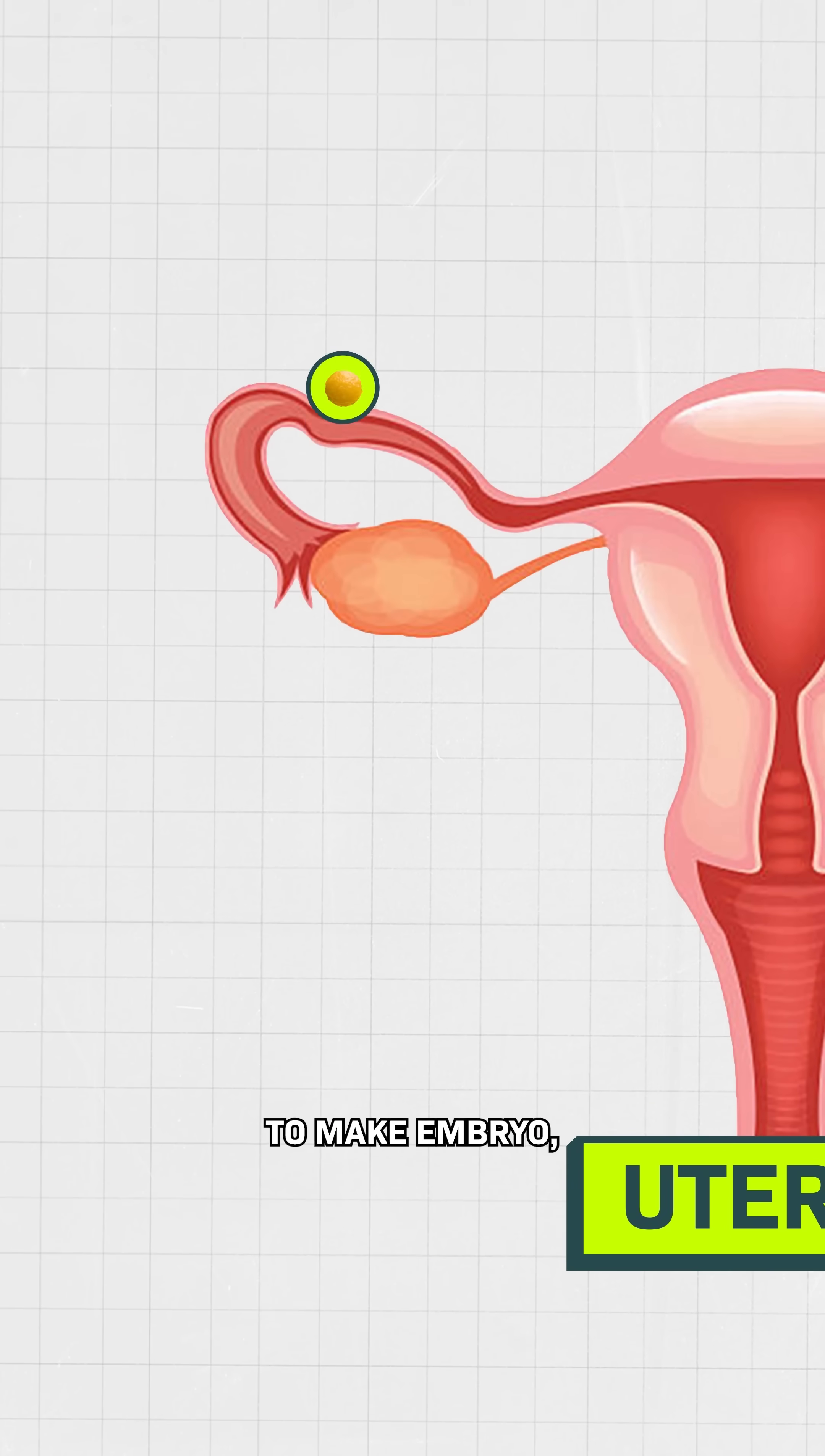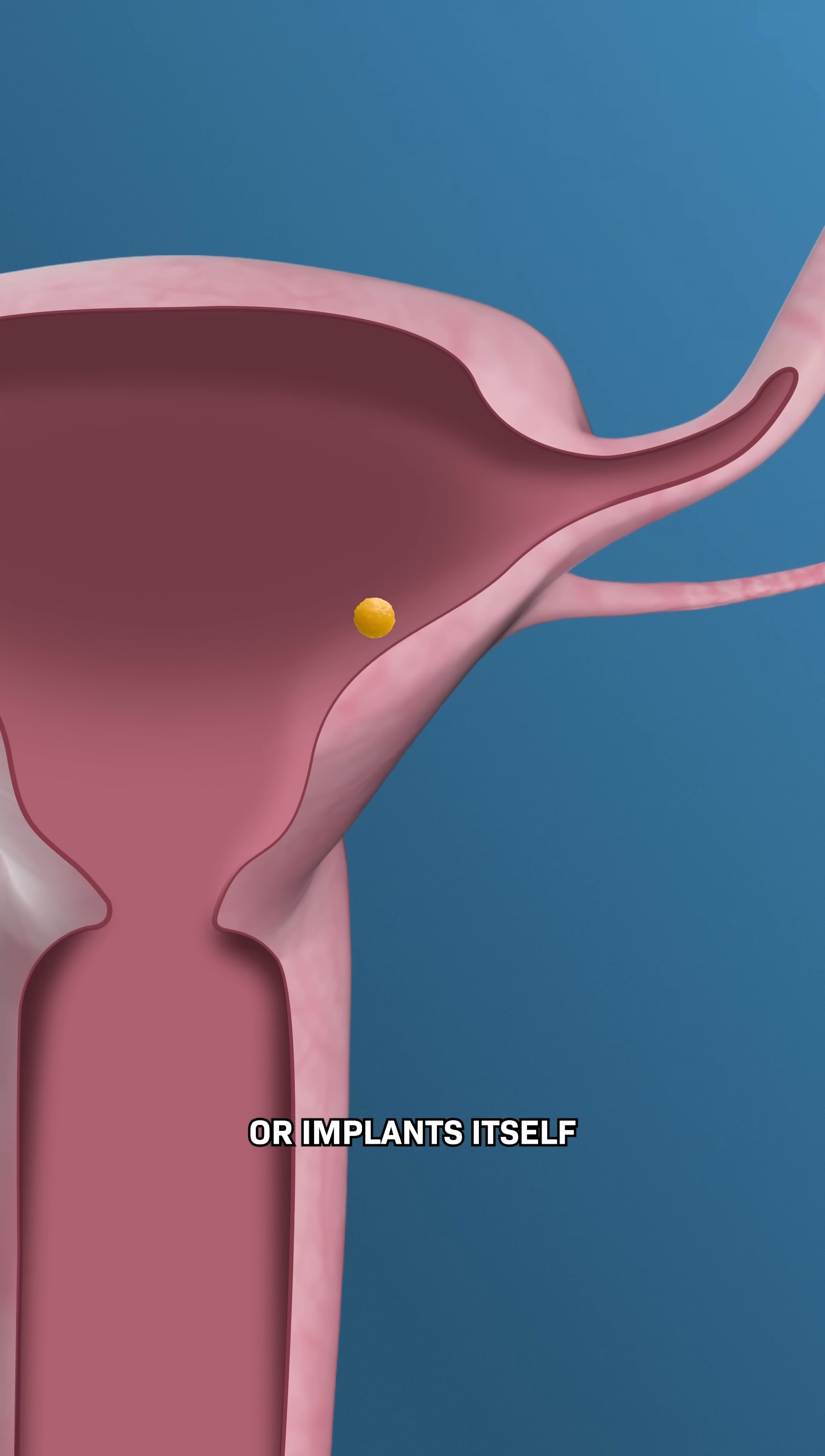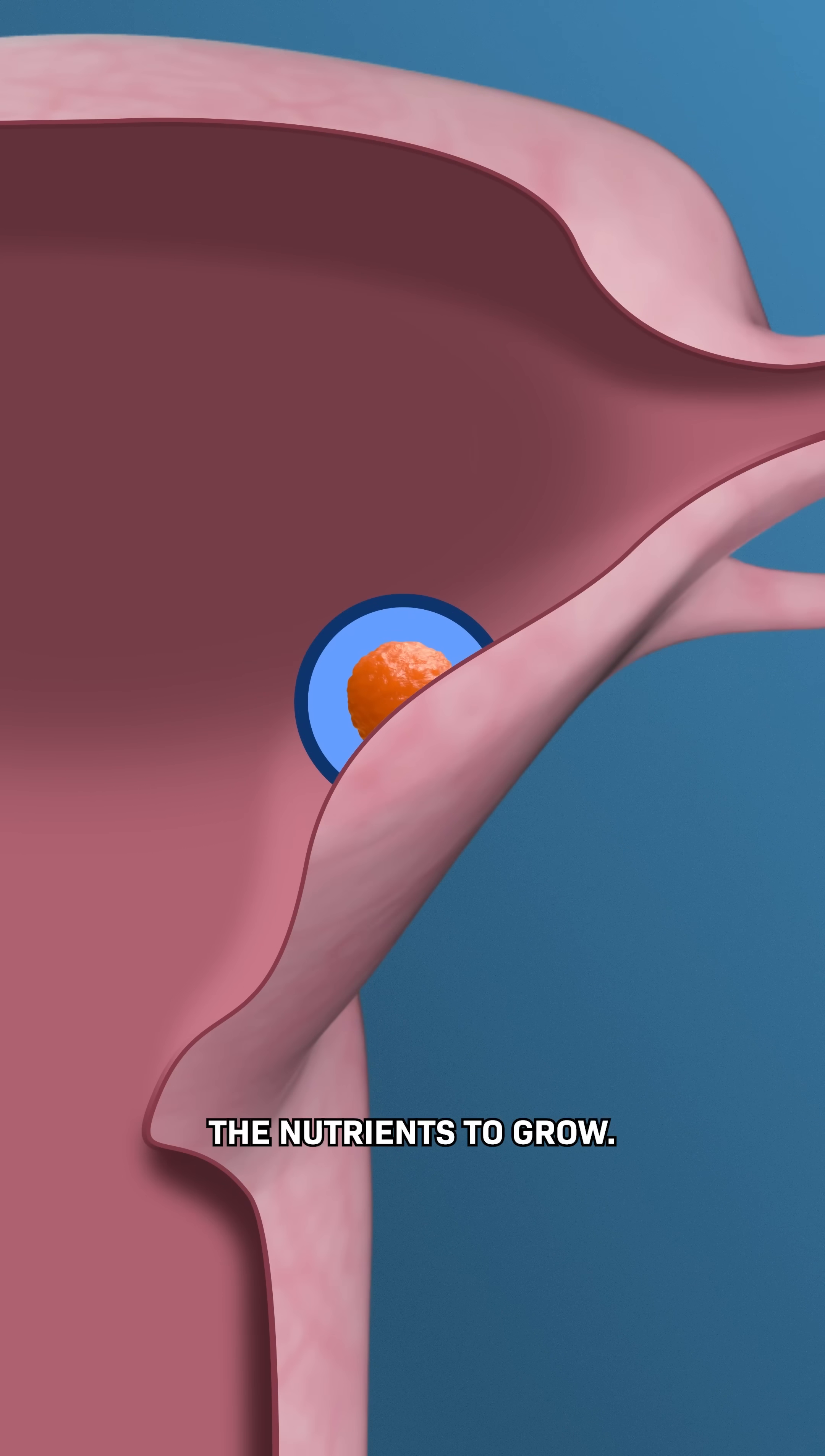You remember egg meets sperm to make an embryo. But then that embryo attaches or implants itself into the lining of the uterus, where it gets the nutrients to grow.